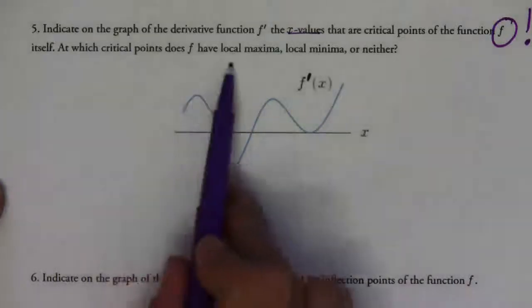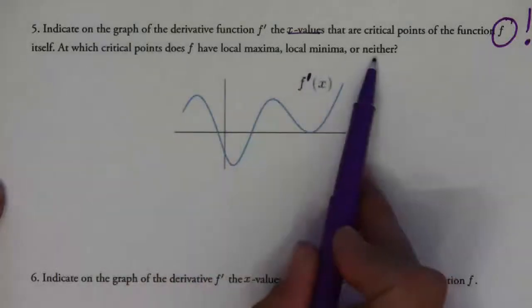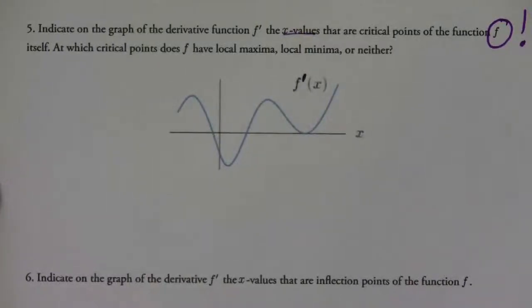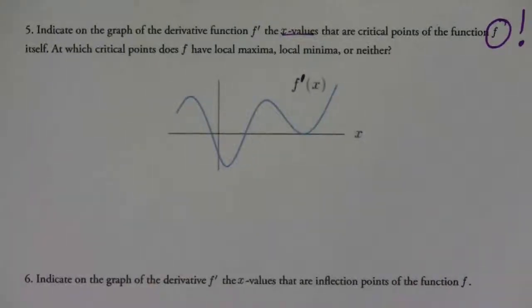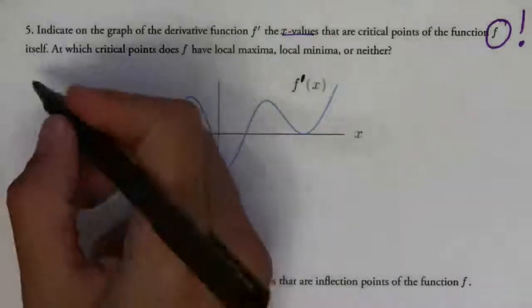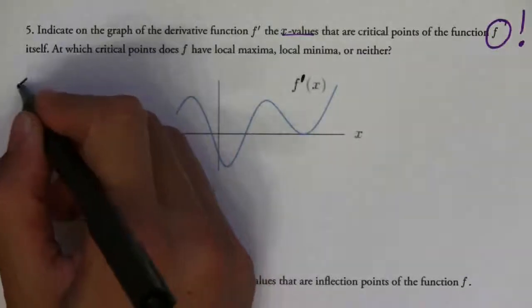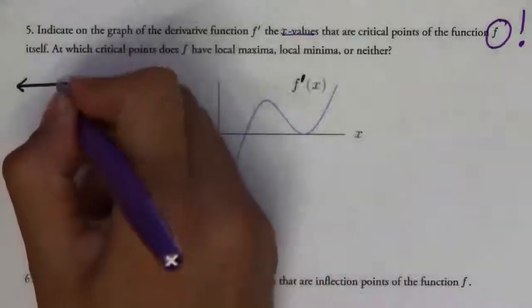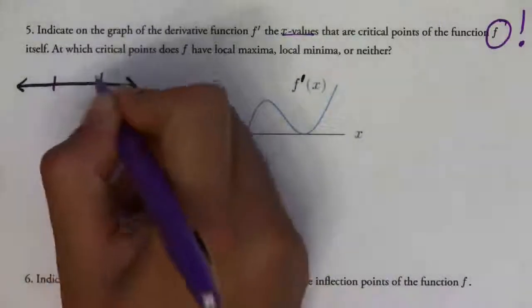You also have to say which ones are local maximums, local minimums, or neither. To be able to answer this question, we need to remember how we find the local maximums and minimums when we find the critical points. Remember the first derivative test — when you do it, you have this number line. Let's say, for example, you have a 4 and then 7.